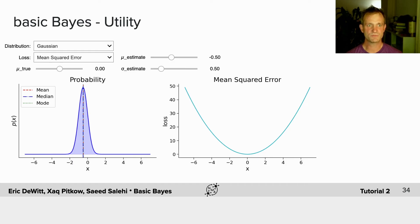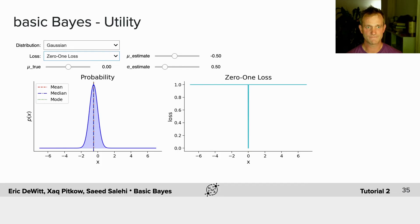Importantly, you can explore the loss function given different means and estimates for a simple Gaussian. In this case, you'll see that the mean, mode, and median are the same.